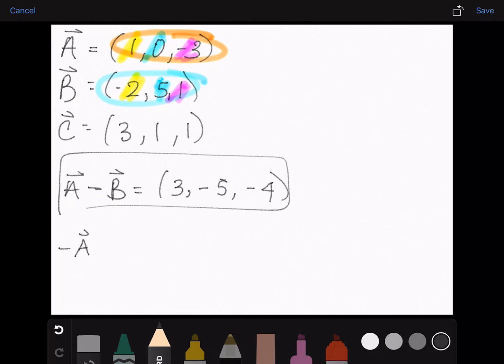negative A plus B minus C. So we'll just do the same thing, but for A we need to flip the signs of each of the components. So negative A will equal negative 1, 0, and 3.